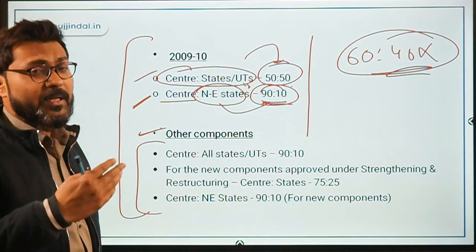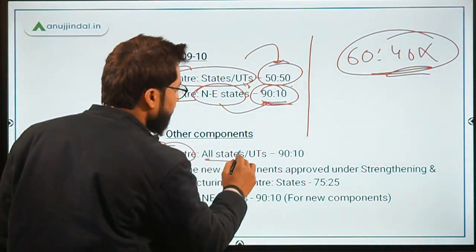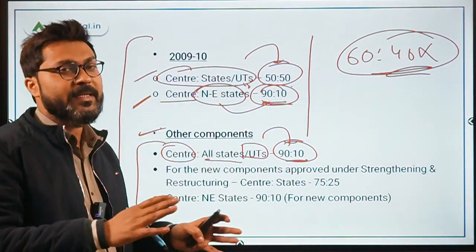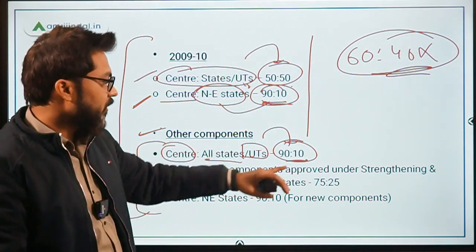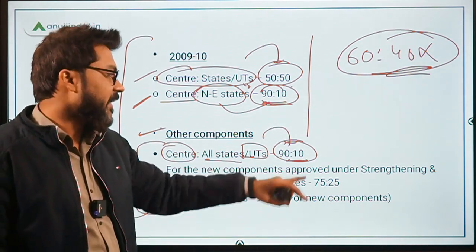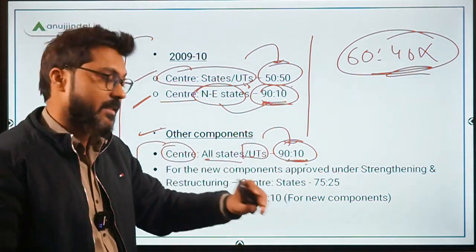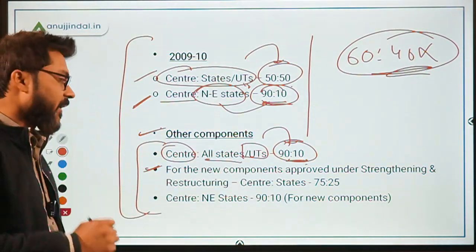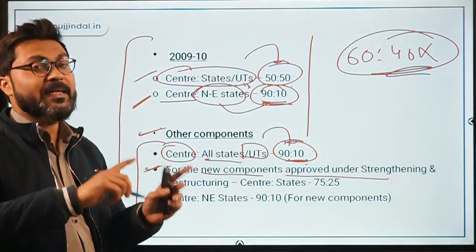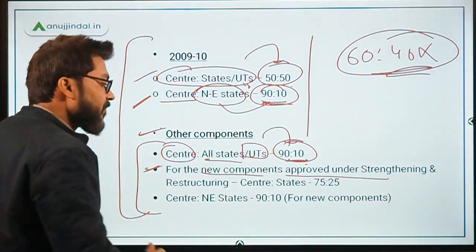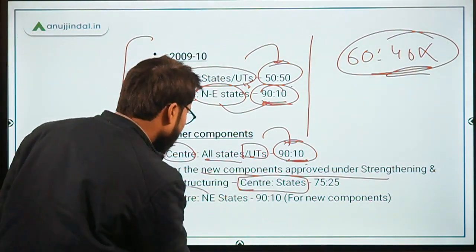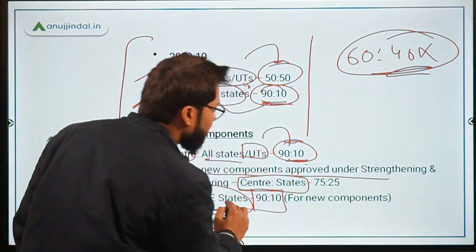Talking about the other components: for other components, the center-to-state ratio is 90:10 for all states and UTs — including northeastern states and normal states and UTs — 90% is provided by the central government through the Ministry of Women and Child Development, while 10% is provided by the respective states or UTs. For new components approved under strengthening and restructuring, the ratio between center and state is 75:25, while for northeastern states it is fixed at 90:10.